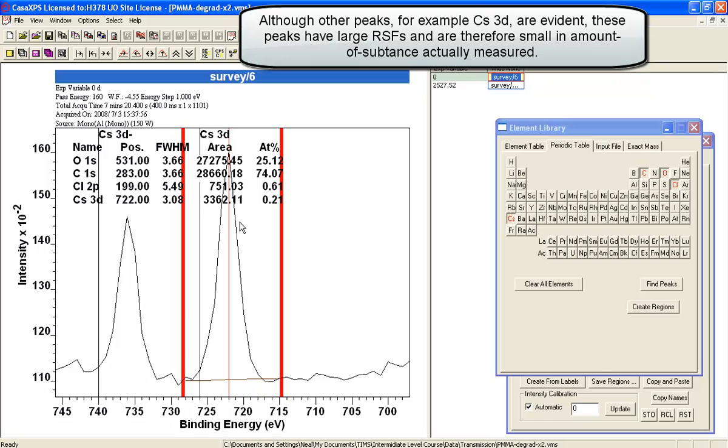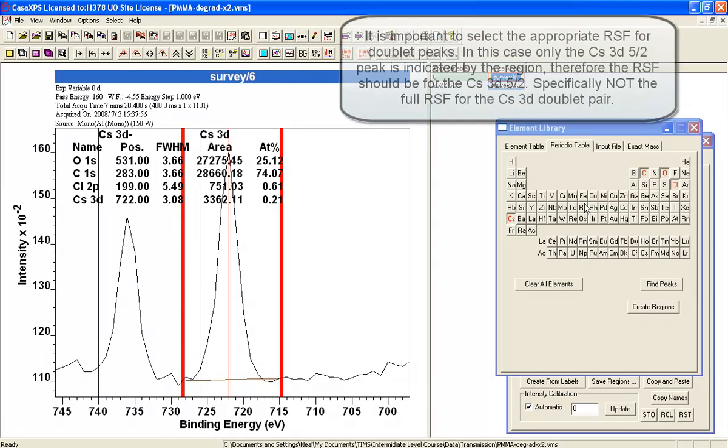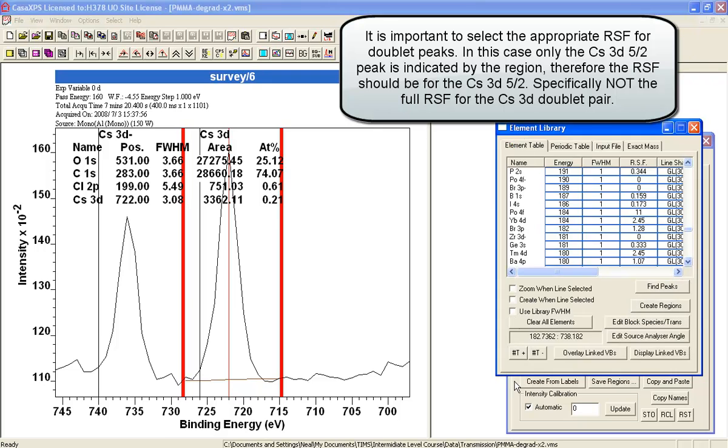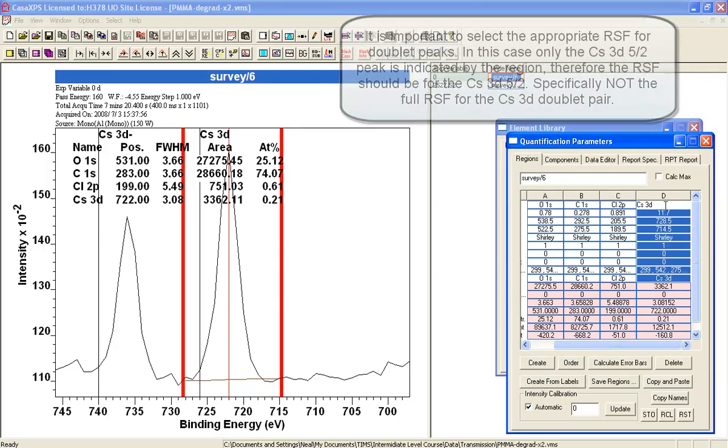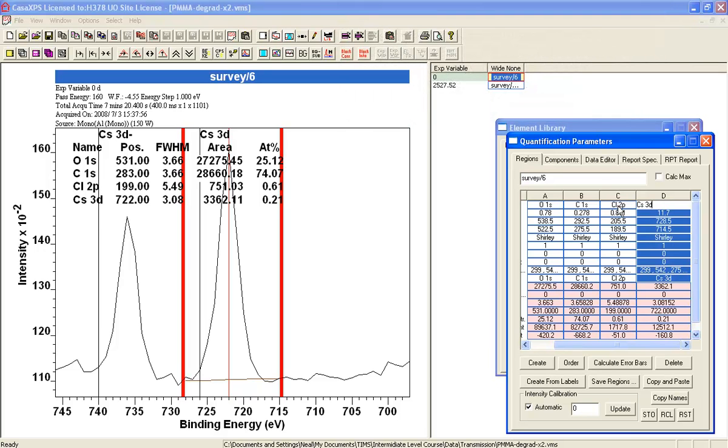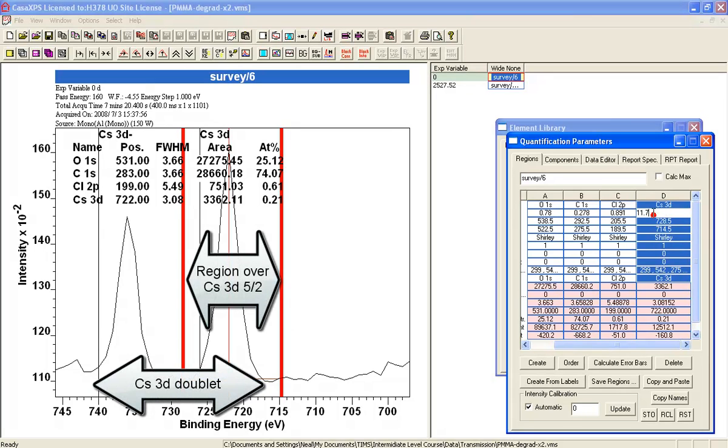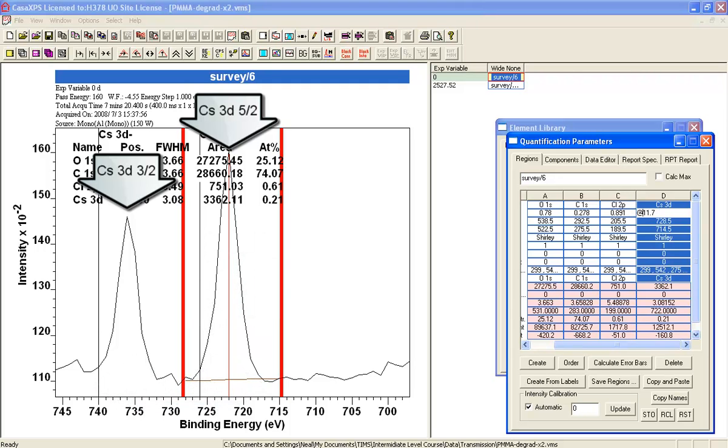Here we've got a doublet and the sensitivity factor in the element library for this particular cesium 3D doublet is for both peaks. I've only got one peak identified so I need to adjust the relative sensitivity factor to be the five halves peak. If I enter ampersand and press return, it'll calculate the ratio and work out the RSF from the library.